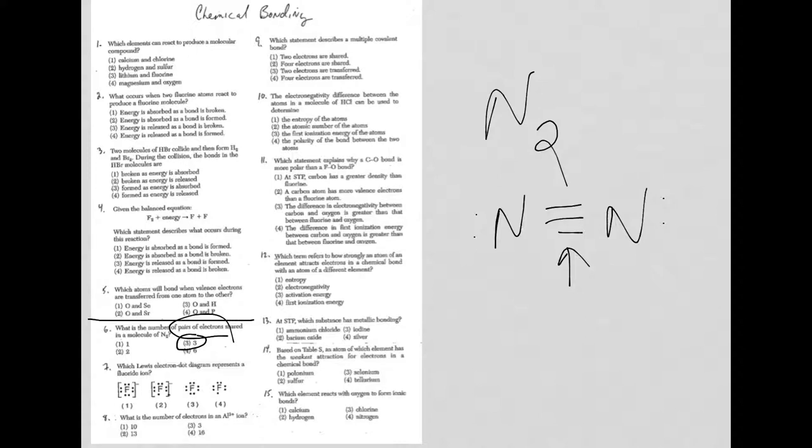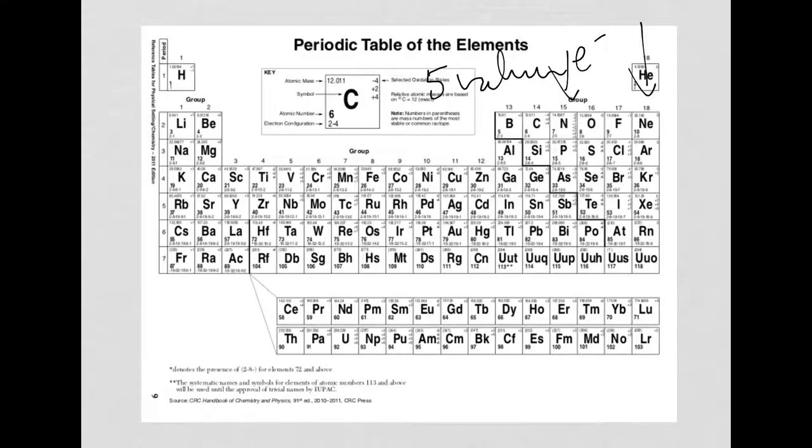Let's move on to number 7. It says, which Lewis electron dot diagram represents a fluoride ion? Well, again, you've got to go to the periodic table. Some of you might think you know this off the top of your heads. Use the table. Always double check. I'm dealing with fluorine. Fluorine has 7 valence electrons.